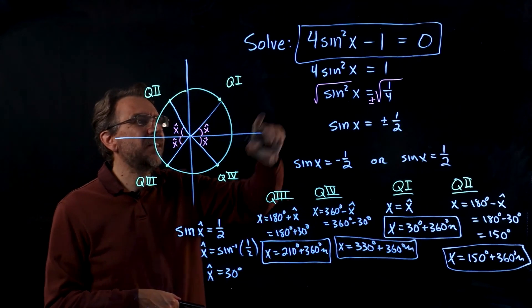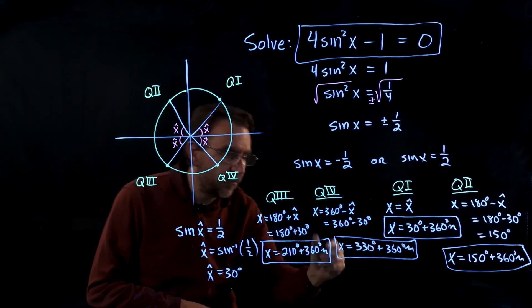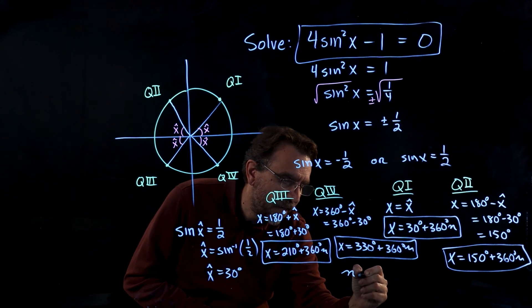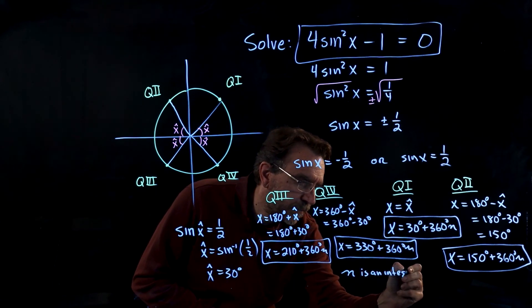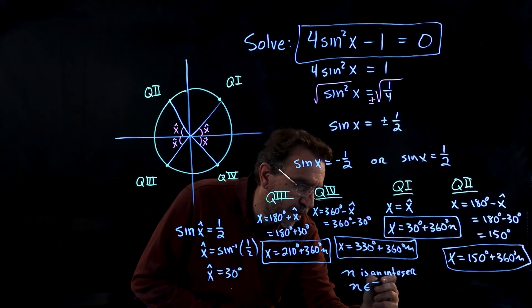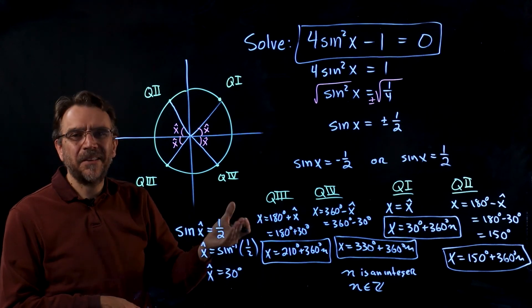All right, so those are all the answers to the original trigonometric equation that happened to be quadratic. Now one last thing, we don't want to forget to say that n is an integer, or you can say n is an element of the set of integers like that. Okay, there you have it.